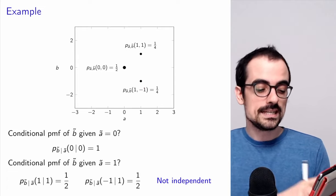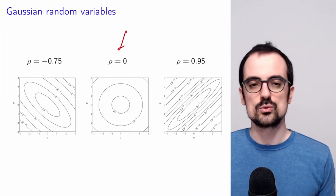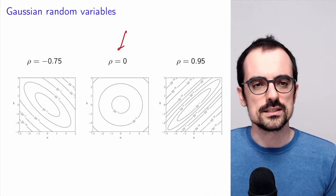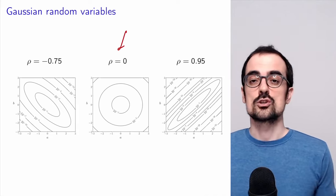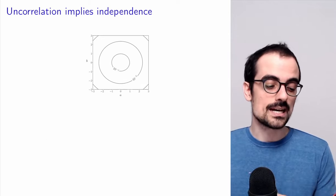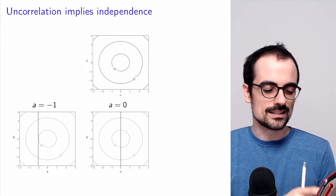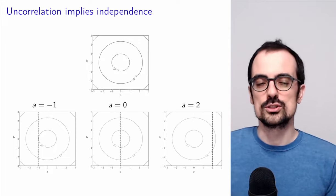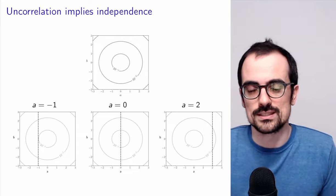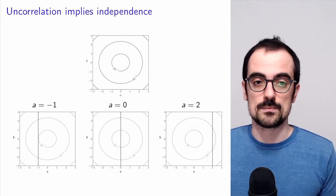In general, zero covariance does not imply independence. However, it does imply independence for Gaussian random variables. If the correlation coefficient between two Gaussian random variables is zero, we can see this in the contour lines of their joint density — slicing the joint distribution yields conditional PDFs that are exactly the same only when the correlation coefficient is zero. So for Gaussian random variables, zero correlation does imply independence, but not in general.